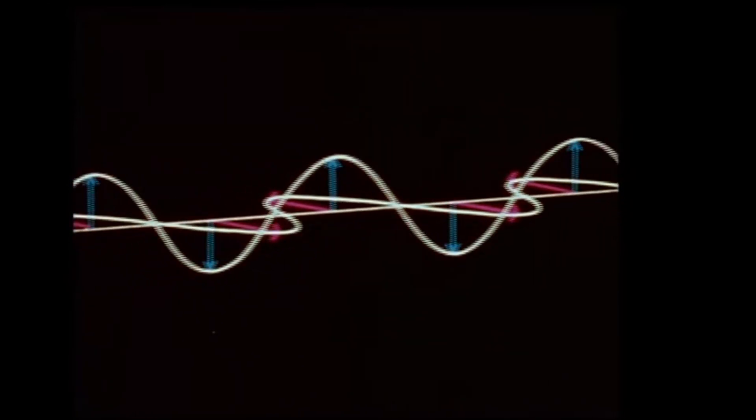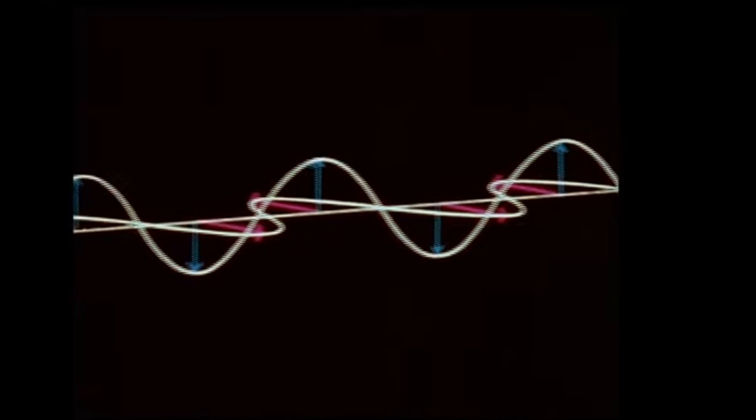The polarity of an antenna is determined by the plane of the E field. To obtain a maximum signal, both the transmitting and receiving antennas must be in the plane of the E field.